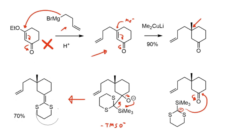The result is formation of a double bond at this position, and the reaction proceeds in 70% yield, which is fairly decent. The product is a ketene thioacetal.